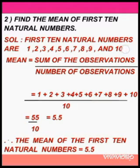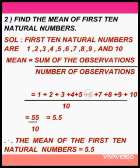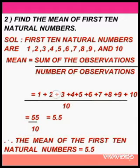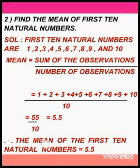So 1 plus 2 plus 3 plus 4 plus 5 plus 6 plus 7 plus 8 plus 9 plus 10, by the number of observations — how many natural numbers? 10. If you add these, you get 55 by 10, which is equal to 5.5. So the mean of the first 10 natural numbers is equal to 5.5.